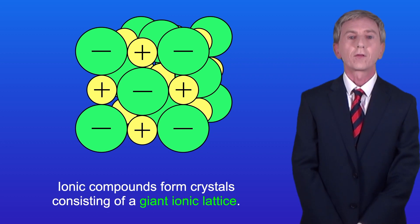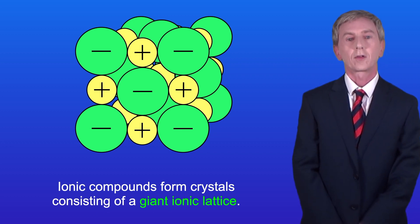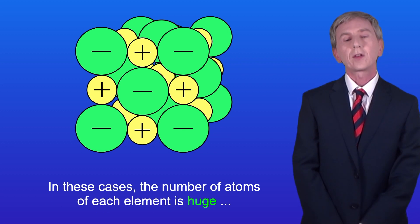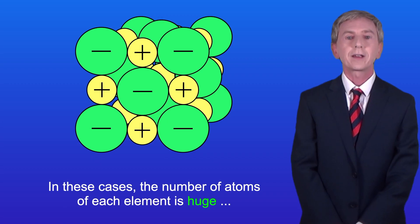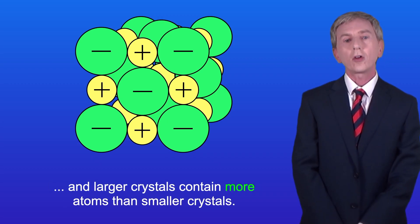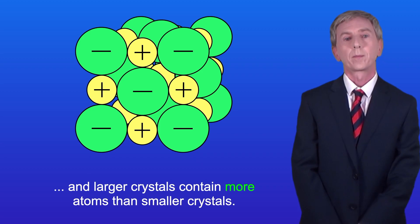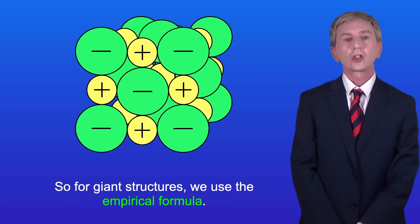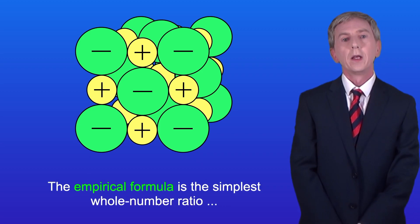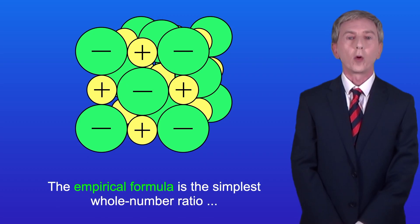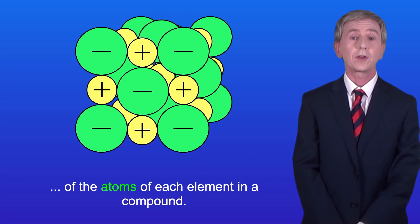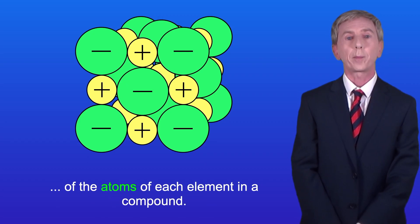Ionic compounds form crystals consisting of a giant ionic lattice. In these cases the number of atoms of each element is huge and larger crystals contain more atoms than smaller crystals. So for giant structures we use the empirical formula. The empirical formula is the simplest whole number ratio of the atoms of each element in a compound.